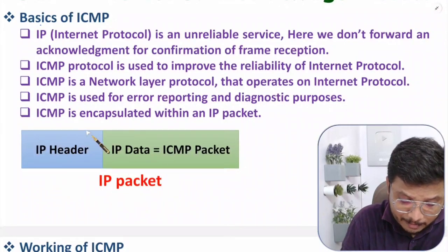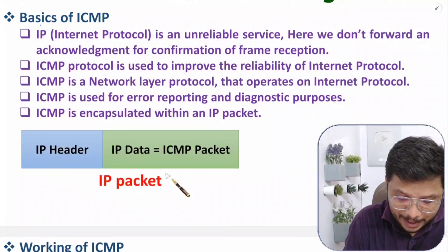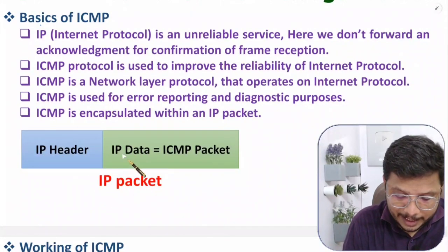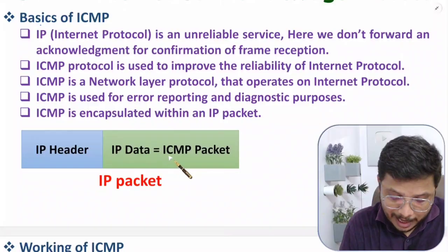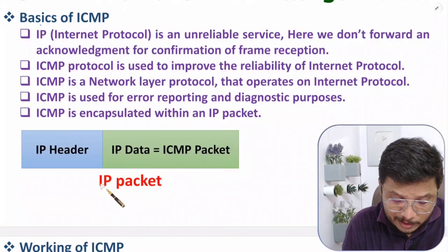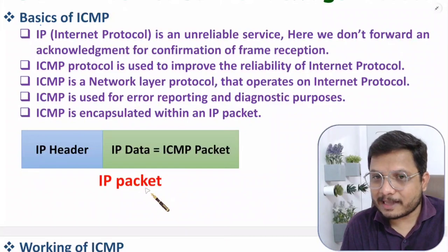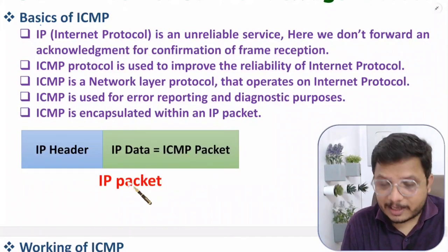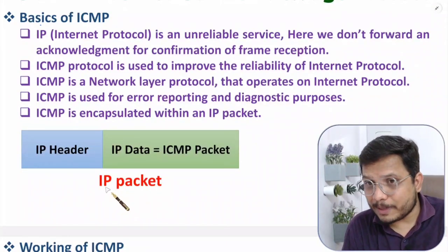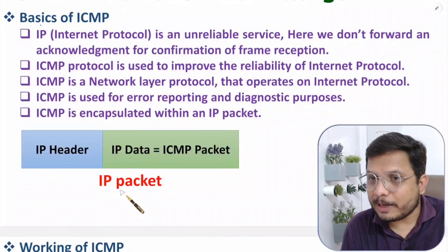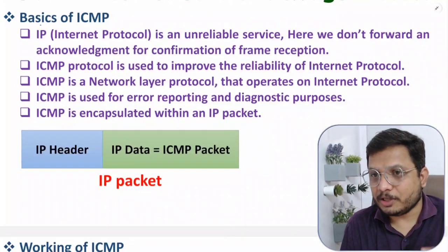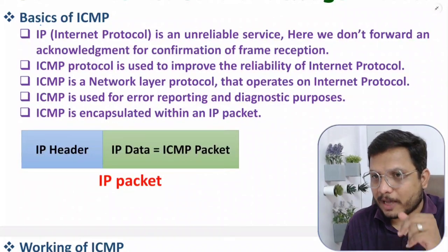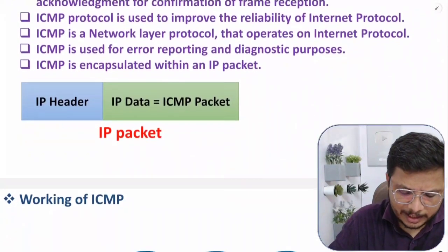ICMP is encapsulated within an IP packet. An IP packet has two parts: IP header and IP data. The ICMP packet sits inside the IP data field. That is why ICMP is said to be implemented on IP — we implement it to improve the reliability of data transmission using IP.